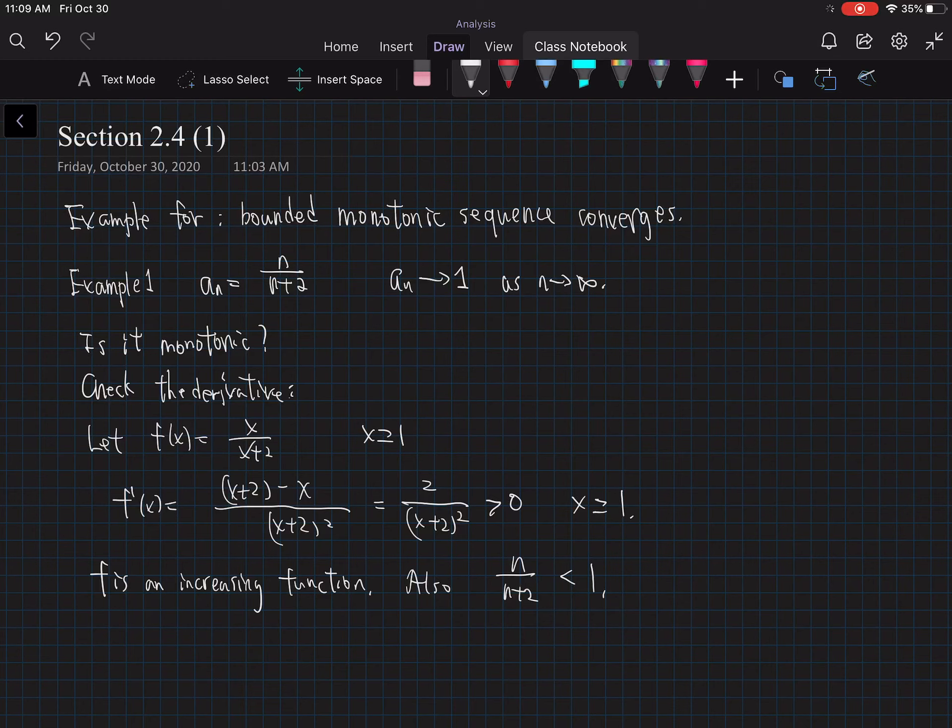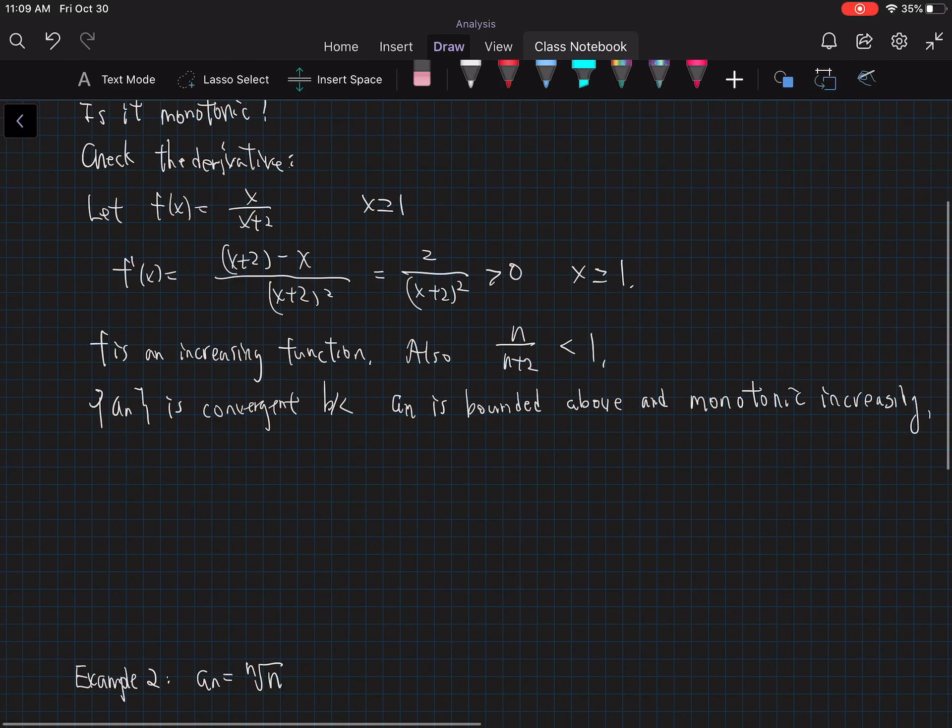So this series is convergent because a_n is bounded above and monotonic increasing. Okay. So that's one way to look at it.